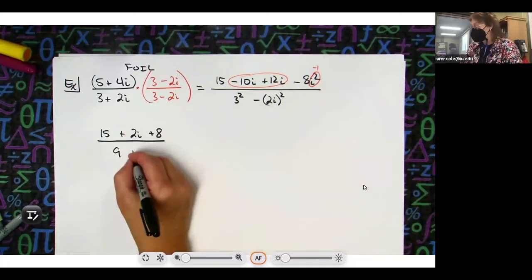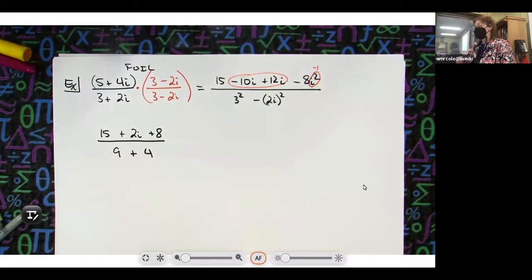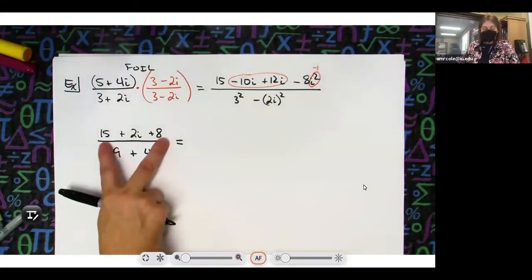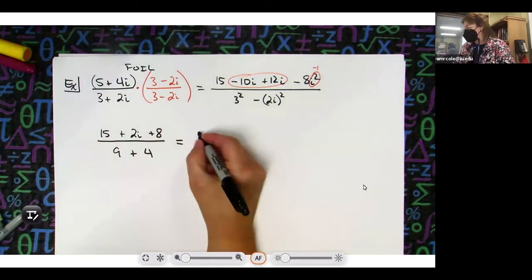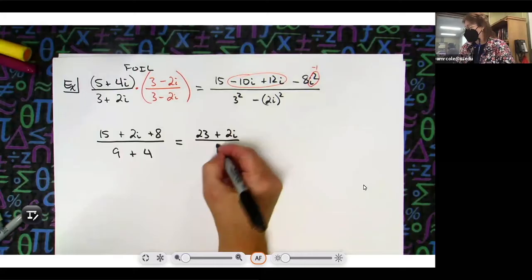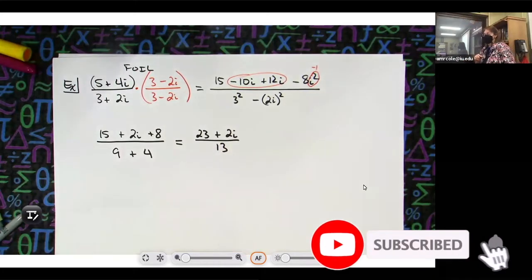So plus 4. Totally coincidental that we got 13 on the bottom on this one too, they won't always be 13. Go ahead and keep the top in that a plus bi form. So when I add 15 and 8, put the 23 first and then 13 on the bottom.